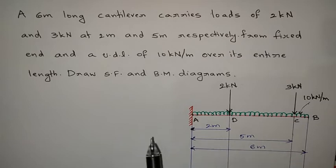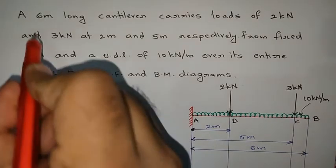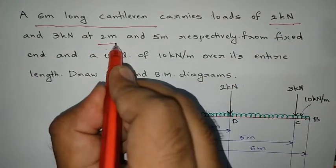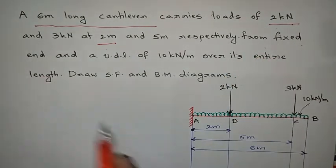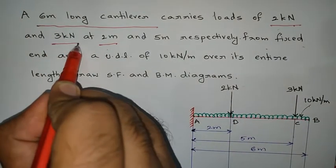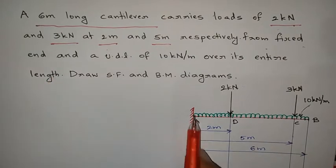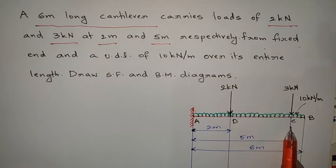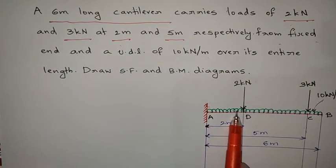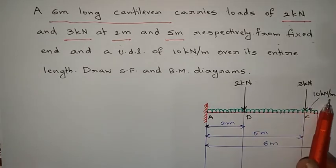The figure is not given, so you can draw it on your own. We have a 6-meter long cantilever beam. A 2 kN load is acting at 2 meters from the fixed end. A 3 kN load is acting at 5 meters from the fixed end. And a UDL of 10 kN per meter is acting over the entire length of the beam.